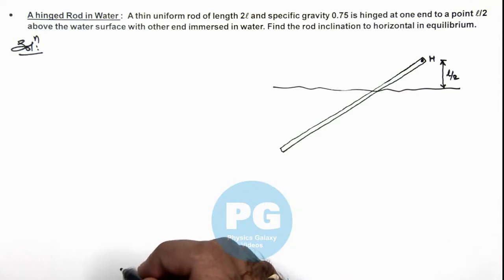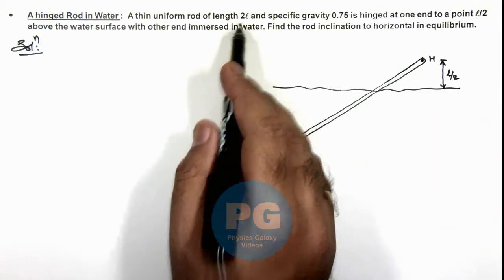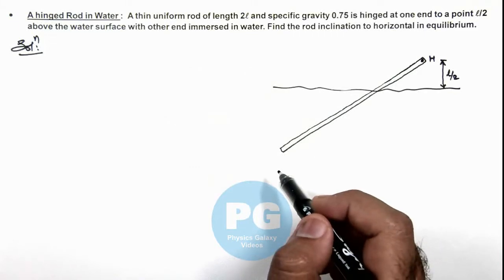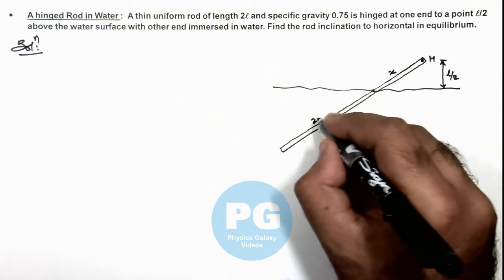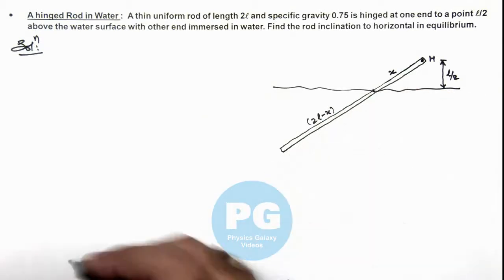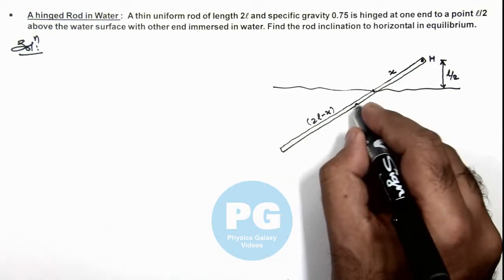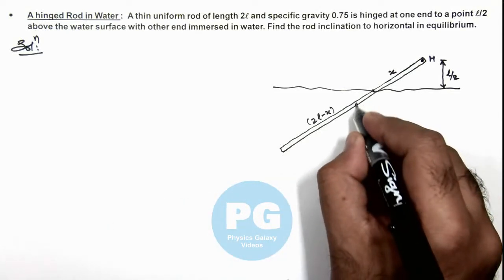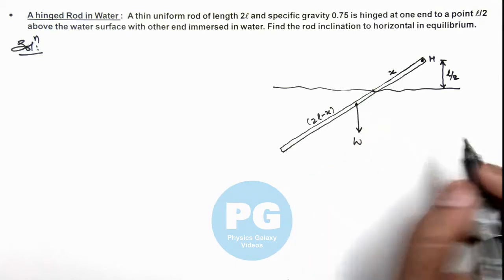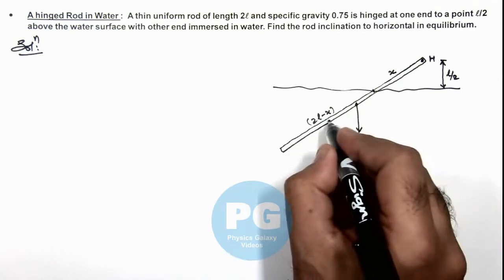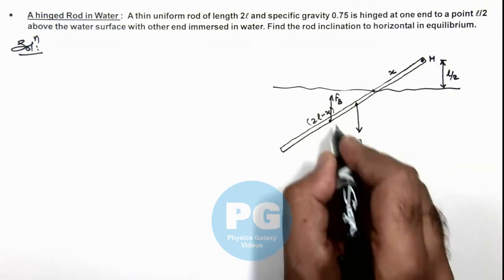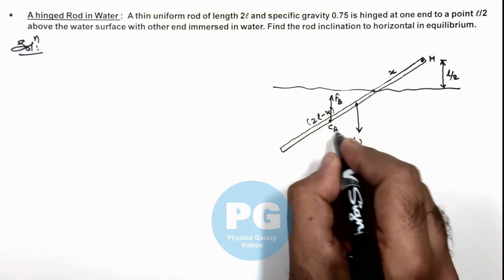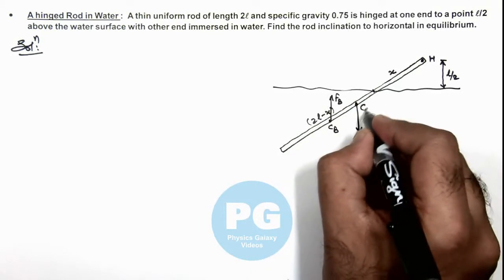Now in this situation, if we consider that rod length is 2l, and a part length x is there in air, so 2l minus x length of rod will be submerged in the water. In this situation at the midpoint of the rod its weight will be acting, that is W. And in the submerged length at the midpoint of the submerged length it will be experiencing a buoyancy force in upward direction. This we can consider as center of buoyancy and this is the center of gravity of this rod.